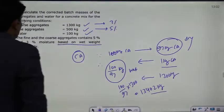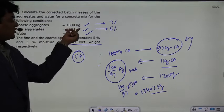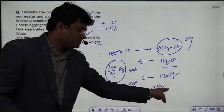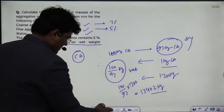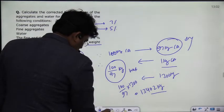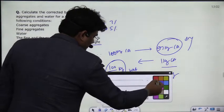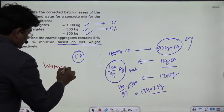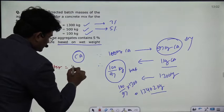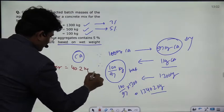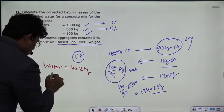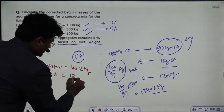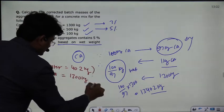So you can see that the coarse aggregate batch mass to use is 1340.2 kg. That means the water contained in the coarse aggregate is 1340.2 minus 1300, which equals 40.2 kg. The coarse aggregate dry mass remains 1300 kg.